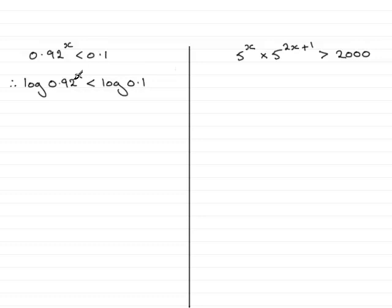I use the power rule for logs, and that is that the x can come out the front of the log, and we have x log of 0.92 is less than the log of 0.1. Now at this stage, what we would need to do is divide both sides by the log of 0.92, and that will give me x. So I divide the other side by the log of 0.92.